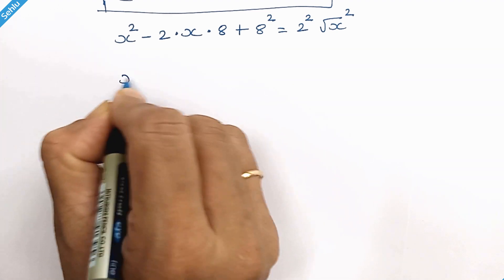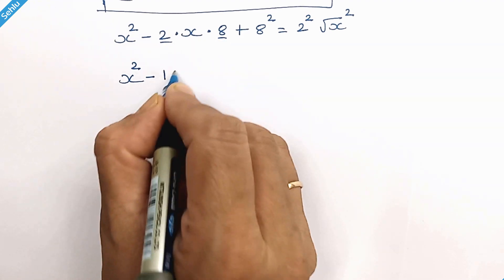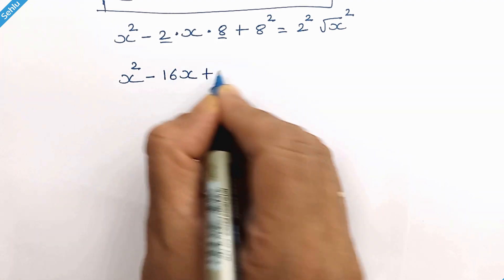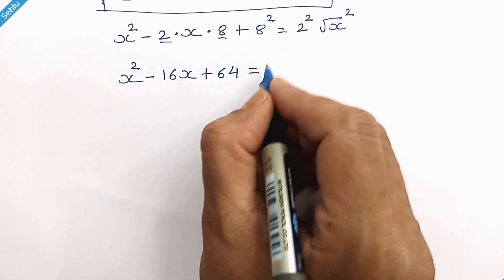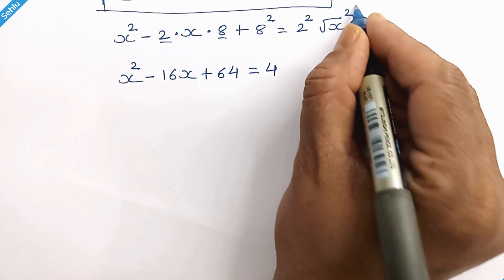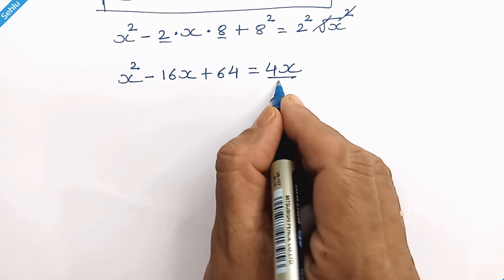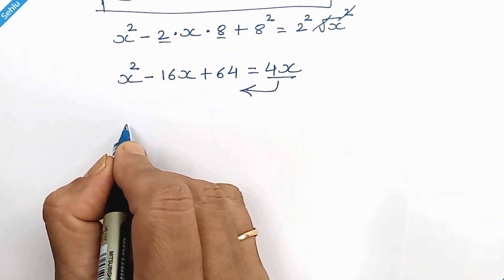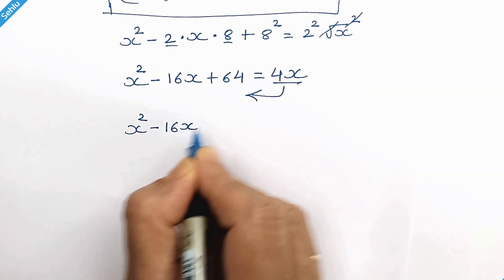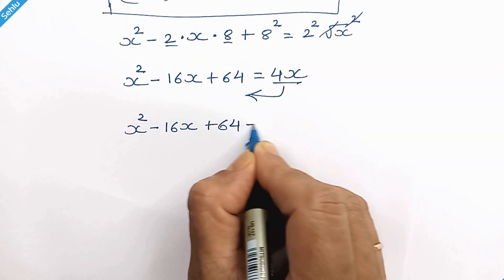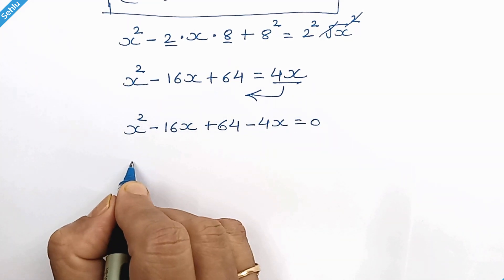Now it becomes x squared minus 16x plus 64 equals 4x (since 2 squared is 4 and the square and square root cancel out). Moving 4x to the left-hand side and rearranging, we get: x squared minus 20x plus 64 equals 0.